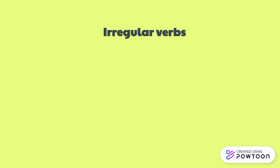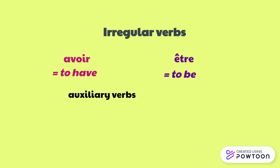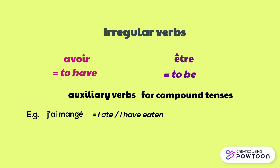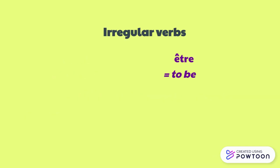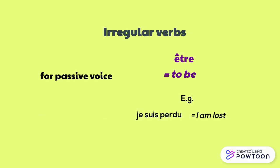There are two essential irregular verbs in French: 'avoir' (to have) and 'être' (to be). They are really important because they are also auxiliary verbs used to form compound tenses. For instance, 'j'ai mangé' (I ate / I have eaten) or 'nous sommes allés' (we went / we have gone). 'Être' is also used to form the passive voice. For instance, 'je suis perdu' — I am lost.